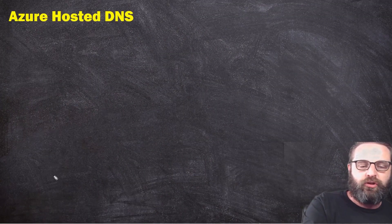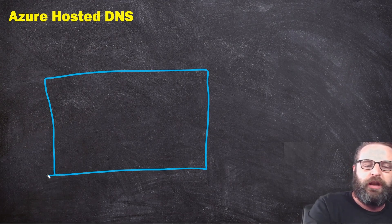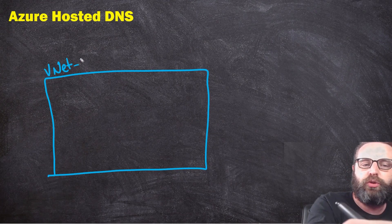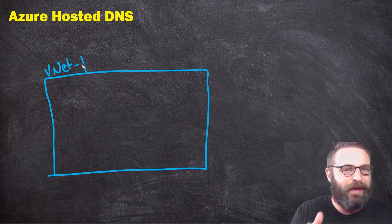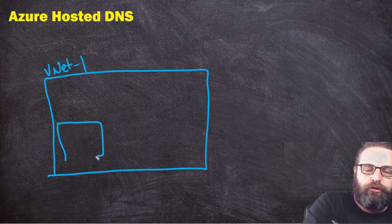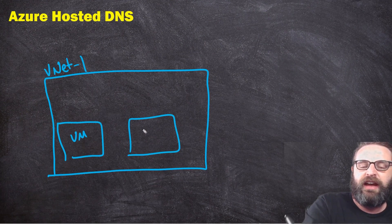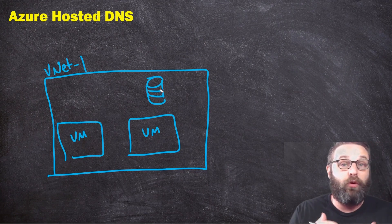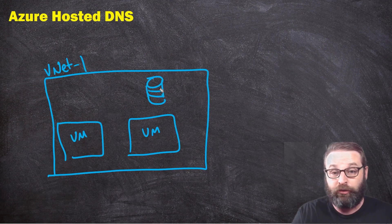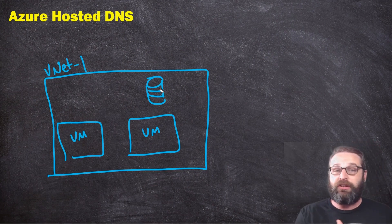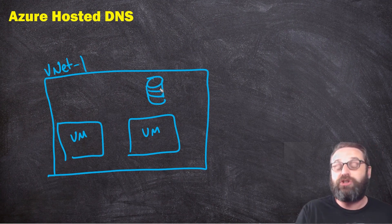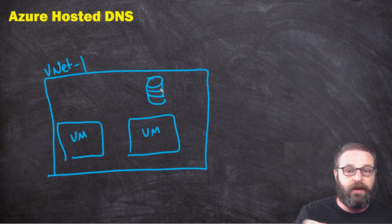When we deploy resources in Azure, specifically when we deploy a virtual network - this box represents my virtual network called VNet1 - something magical happens beneath the scene that you may not have realized. For instance, if I were to deploy a couple of virtual machines attached to this virtual network, or maybe a SQL managed instance as platform as a service that attaches to the virtual network, or maybe a service endpoint - the point is I can attach all sorts of Azure resources into my own private virtual network.